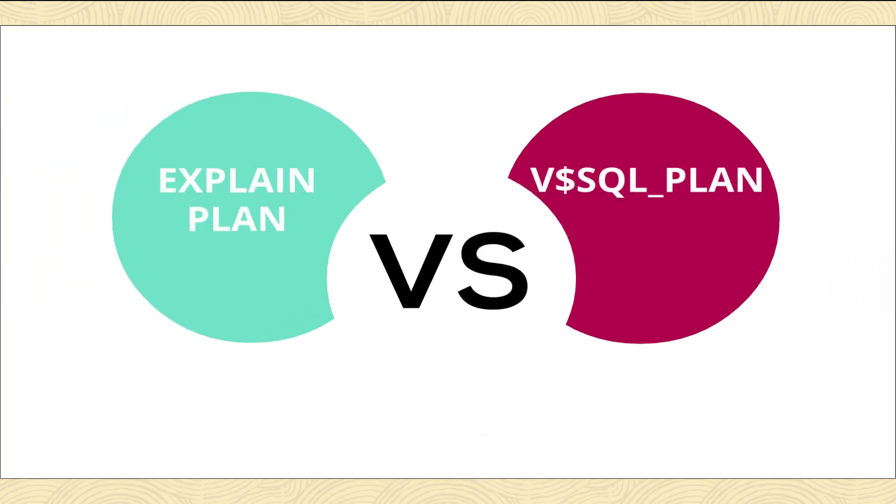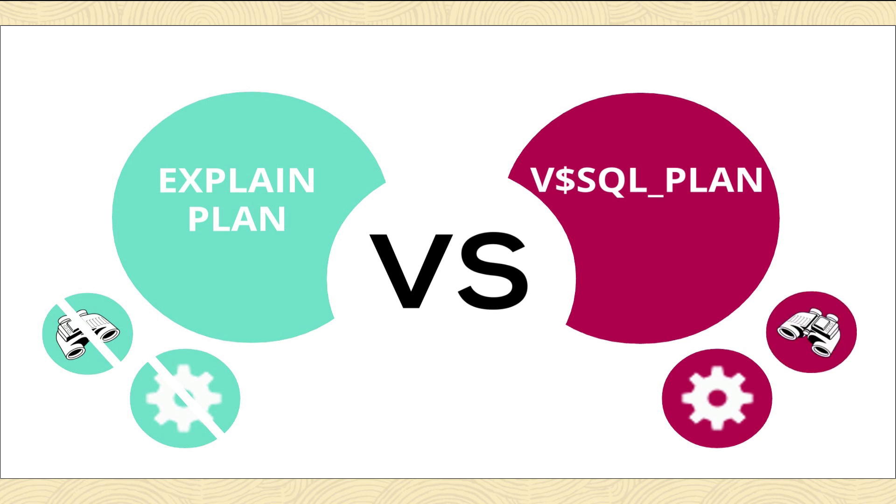Now, you want to be careful. Although explain plan is super useful because you don't actually have to execute the SQL statement in order to see the plan, there are certain occasions, especially if you're using bind variables, where what you see with explain plan is not actually the plan that will be used when that SQL statement is executed. The reason for that is the explain plan command is not bind aware, so it doesn't peek at those bind values, which is why it doesn't potentially show you the plan you'll get if you were to go and execute that.